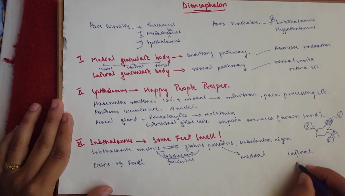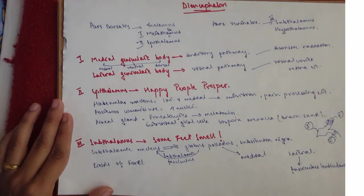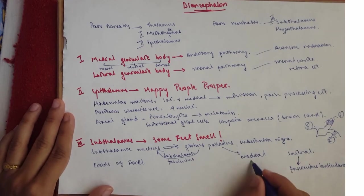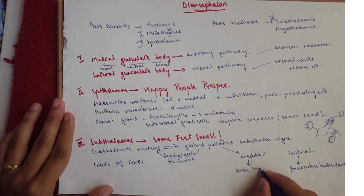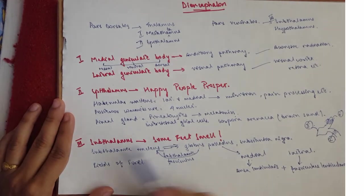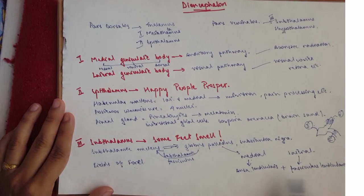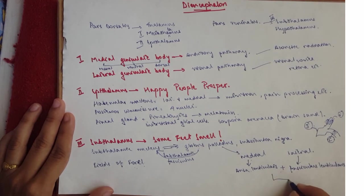So this one gives out the fasciculus lenticularis. And the medial one gives out the ansa lenticularis. These two together form the thalamic fasciculus. Together is the fields of Forel. So this and this together is the fields of Forel, and they combine to form the thalamic fasciculus.